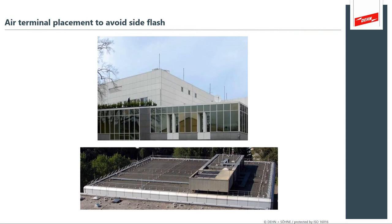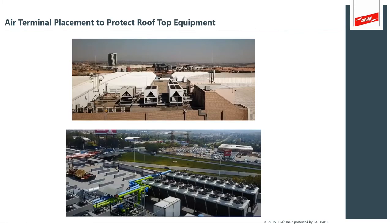Photographs show air terminals placed around the roof of a data center, providing effective coverage while also avoiding side flash danger. Additional photographs show air terminals placed around and above the chillers on a data center structure. The chillers are metal structures on the roof — you want to place air terminals in a manner that avoids injecting current directly into the chiller structures. If you lose your chiller at a data center, you lose your data center.